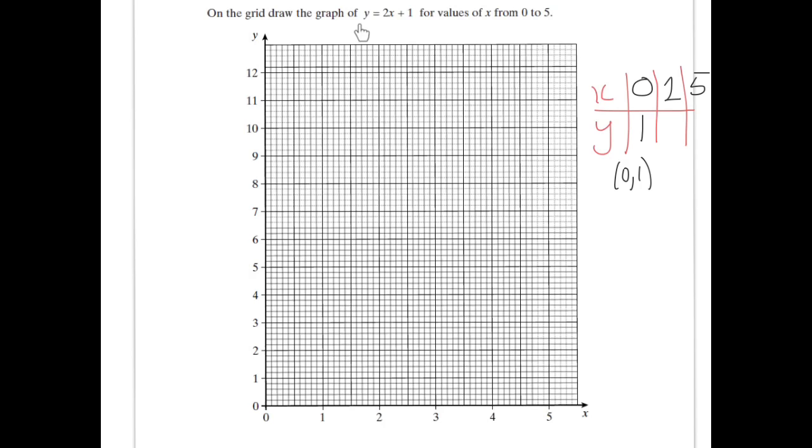Now, when x is 2, I put it into the equation. 2 times 2 is 4, plus 1 is 5. So when x is 2, y is 5. And that's the point, then, 2, 5. When x is 2, y is 5.